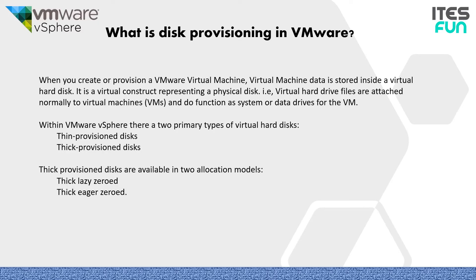So what is disk provisioning in VMware? Whenever we create or provision a VMware virtual machine, the machine data is stored inside a virtual hard disk. It is a virtual construct representing a physical disk. Virtual hard drive files are attached normally to a virtual machine and function as system or data drives for the VM. Within VMware vSphere, we have two primary types of virtual hard disk: thin provisioning and thick provisioning.